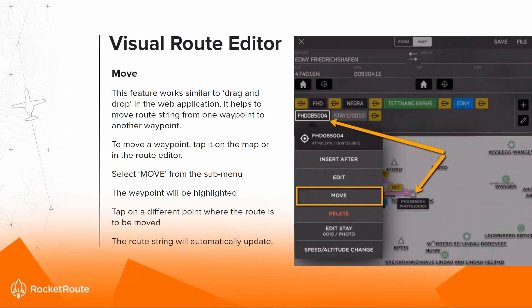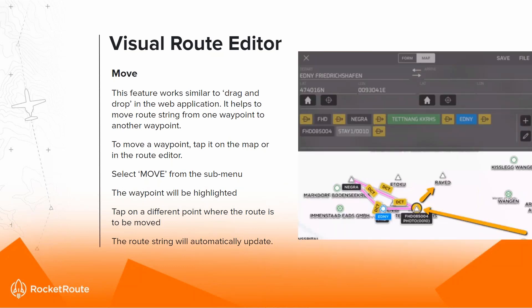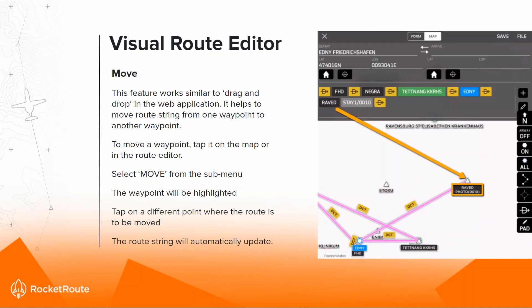If you want to move an existing waypoint in a flight plan, it's similar to the drag-and-drop on the website. You have two options: tap on the submenu or highlight it with a tap on the map. Click Move, the waypoint highlights, and you can move it to the desired position — for example, moving to RAPID — and the route string updates automatically as a result.